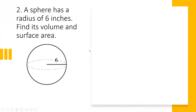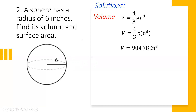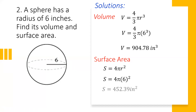For problem number two, a sphere has a radius of 6 inches. Find its volume and surface area. The volume equals 4 over 3 pi r cubed. Substituting the radius of 6 inches gives 4 pi times 6 cubed over 3, so the volume is 904.78 cubic inches. For the surface area, use S equals 4 pi r squared. Substituting gives 4 pi times 6 squared, and you get 452.39 square inches.